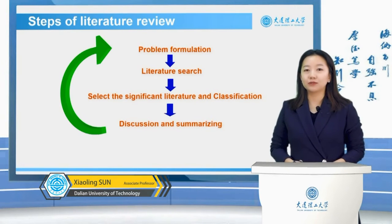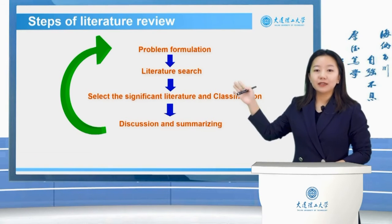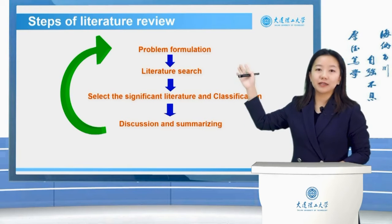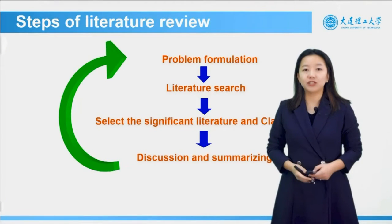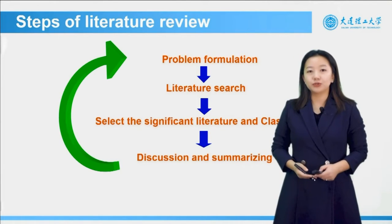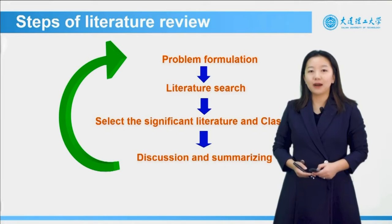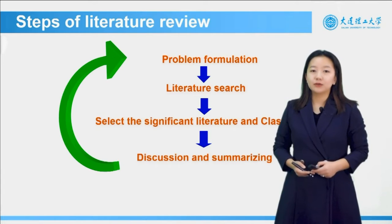Now let's see the steps when you want to write a literature review. Briefly, it can be divided into four parts. The first part is problem formulation. Then you need to search literature. The third part is to select significant literature and classification. The last part is discussion and summarizing.